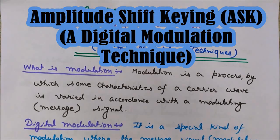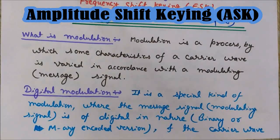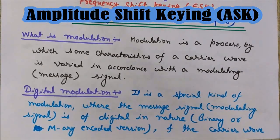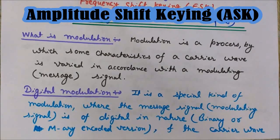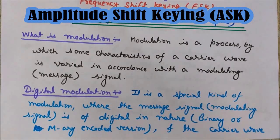Now let's understand what digital modulation is. Digital modulation is a special kind of modulation where the message signal is of digital nature — it may be a binary or M-ary encoded version. The carrier wave is of analog nature. In analog modulation, examples being AM, FM, and PM, we have a sinusoidal carrier wave. In digital modulation, we also have an analog carrier wave.